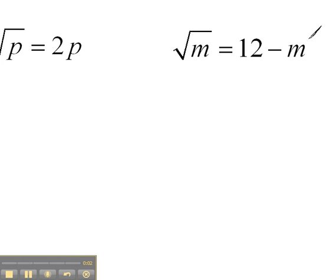Okay, now for this second problem here, the square root of m equals 12 minus m. We have a very similar situation to what we saw in the last problem, where we have m's on both sides of the equation.